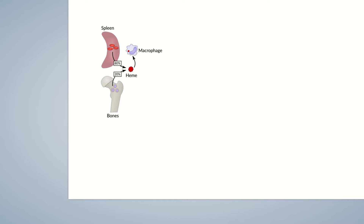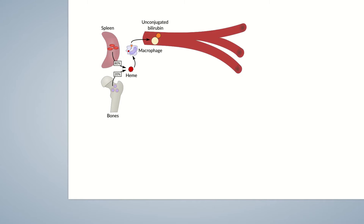In macrophages, the red heme is converted into orange-yellow bilirubin through several intermediate steps. Since bilirubin is initially water-insoluble, it can't be excreted in the urine or bile. The unconjugated bilirubin binds to serum albumin for its transport in the blood plasma so that it can be made water-soluble, that is, conjugated.